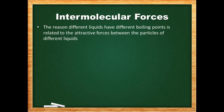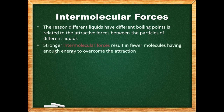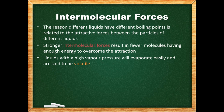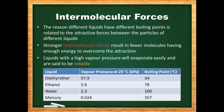The reason different liquids have different boiling points is related to the attractive forces between their particles. Intermolecular forces such as London dispersion forces, dipole-dipole forces, and hydrogen bonds are the forces between molecules. Stronger intermolecular forces result in fewer molecules having enough energy to escape into the gas phase. Liquids with a high vapor pressure evaporate easily and are said to be volatile. Diethyl ether's bent shape gives it slight polarity producing dipole-dipole forces. Ethanol can hydrogen bond but to a lesser extent than water. The liquid metal mercury bonds to its neighboring atoms using the sea of electrons model, giving it a very small vapor pressure and a higher boiling point.